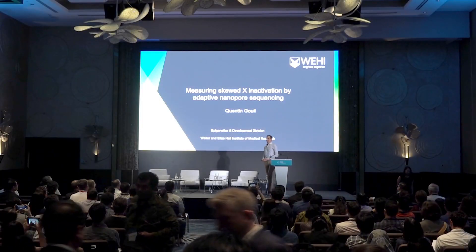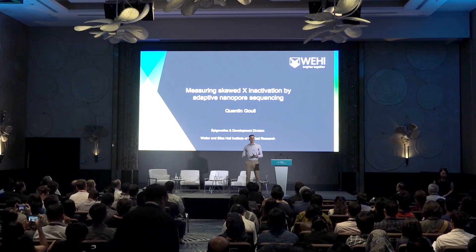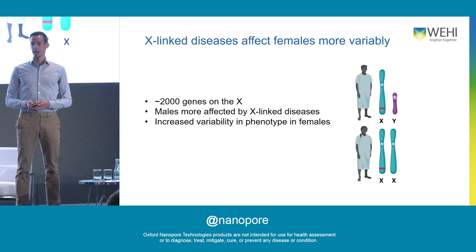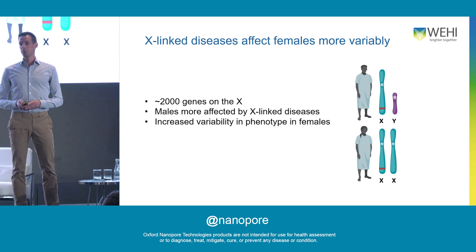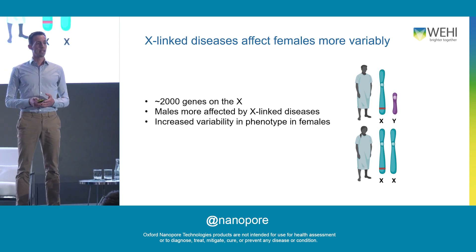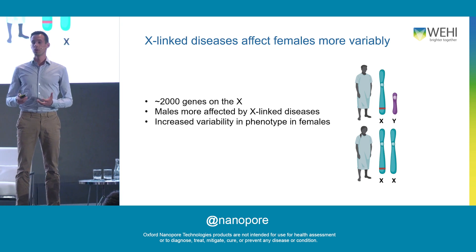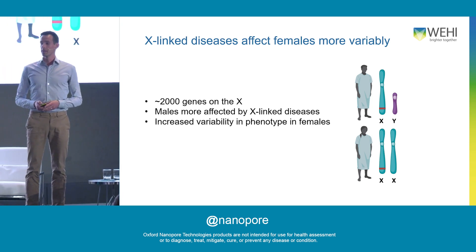Good afternoon. There are many diseases that affect males and females differently and at different rates, and some of this is due to genetic differences. As you all know, males only have one X chromosome whereas females have two. So if a male is carrying an X-linked disease-causing variant, there's no second allele to potentially rescue it, whereas in females there is.